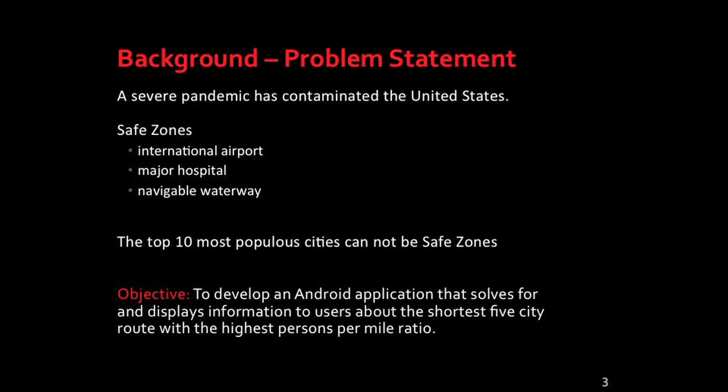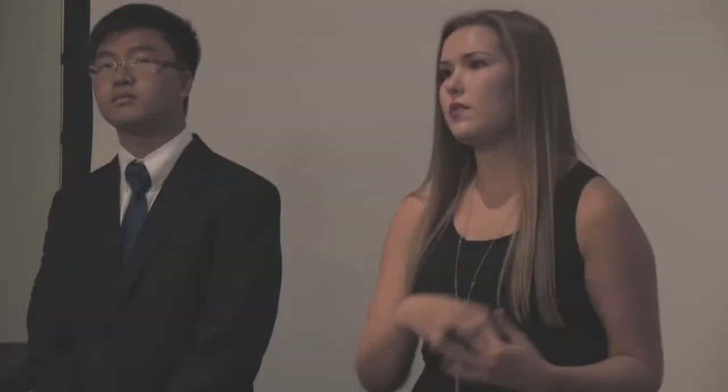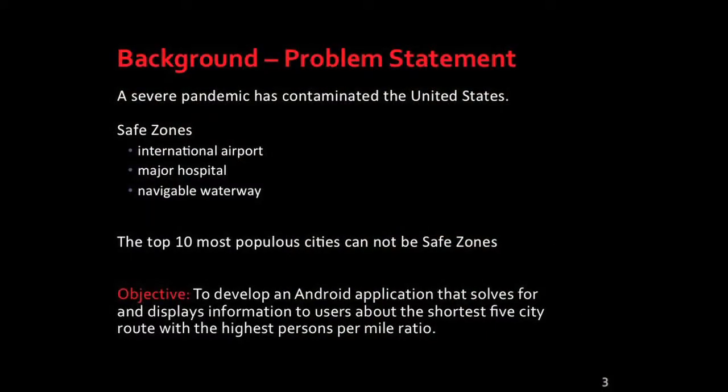Our client approached us representing the United States government in a zombie apocalypse scenario. The government can only go to five safe zones in the United States, which are five cities. It will vaccinate the people within a hundred mile radius of each of those five cities, and the top ten most populated cities in the United States can't be included because they've already been overrun by zombies. Each safe zone has to have a body of water, an international airport, and a hospital so that you can vaccinate the people there.